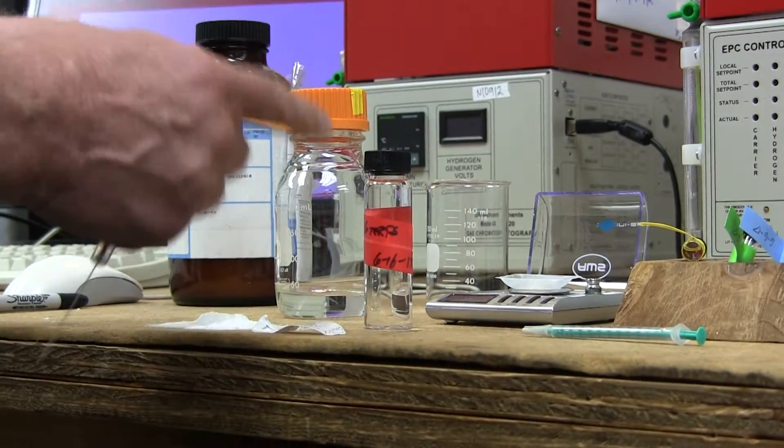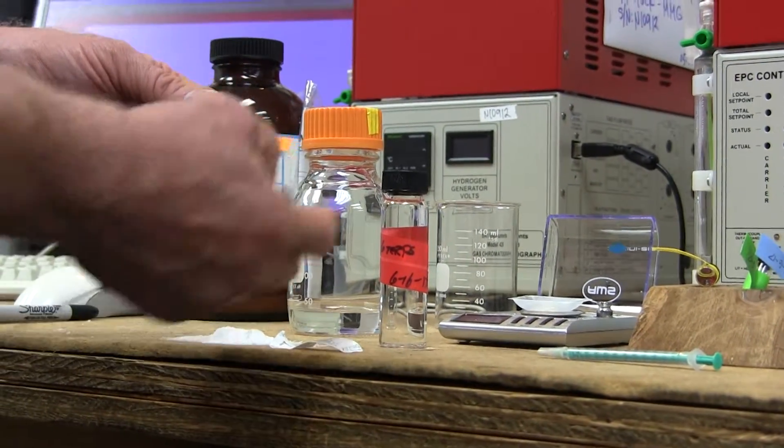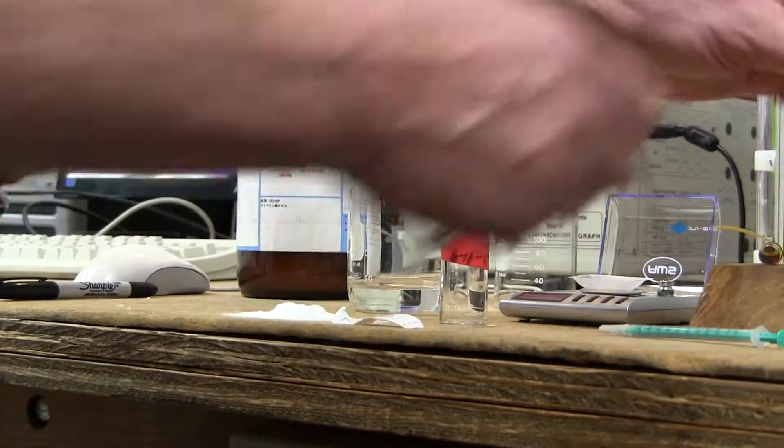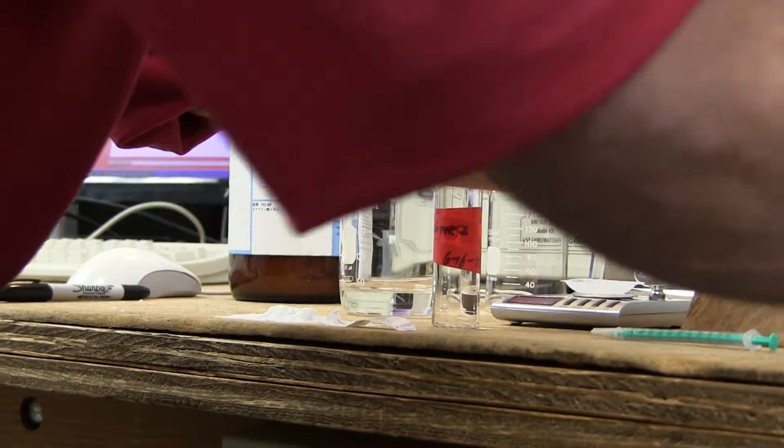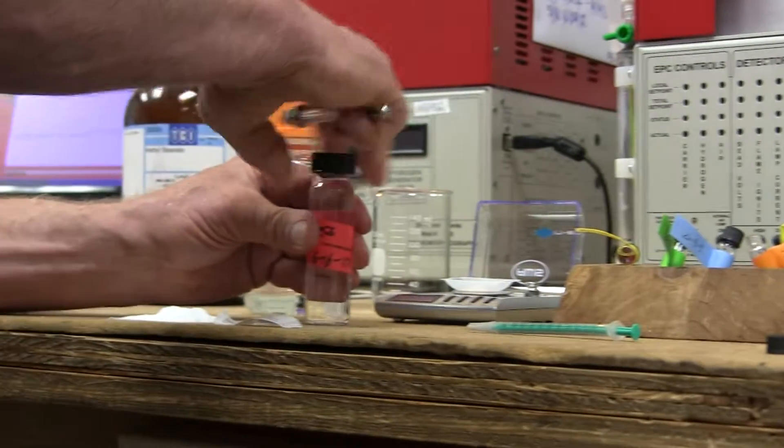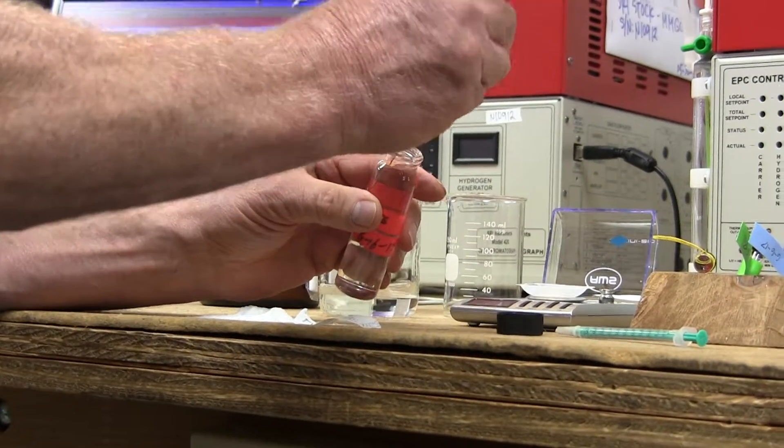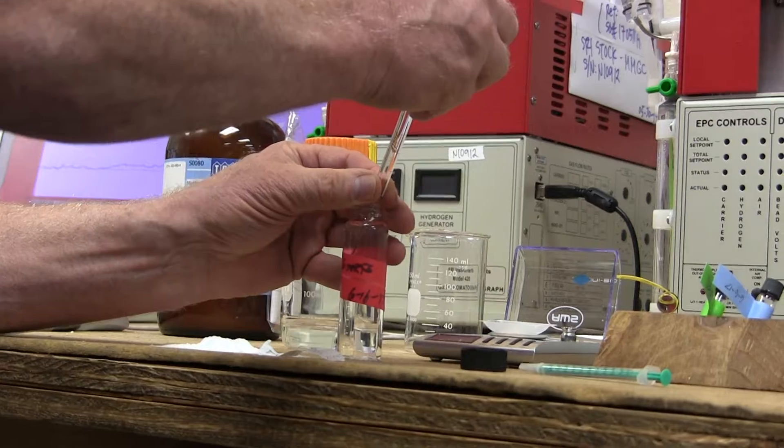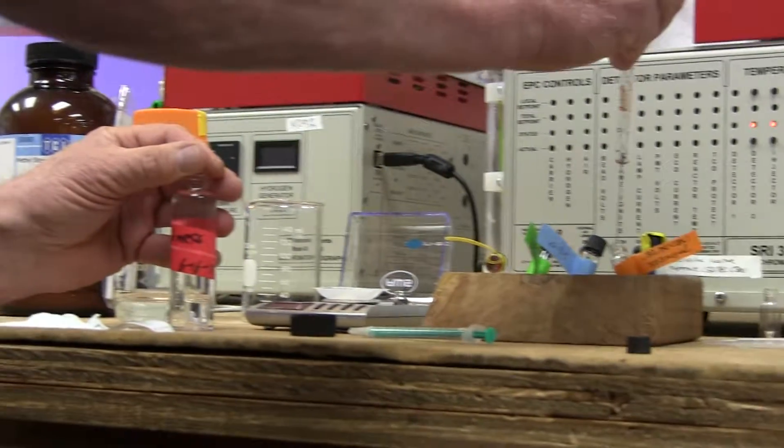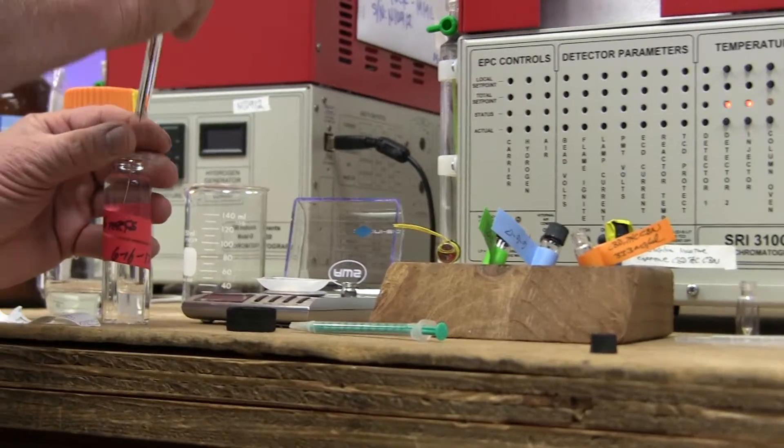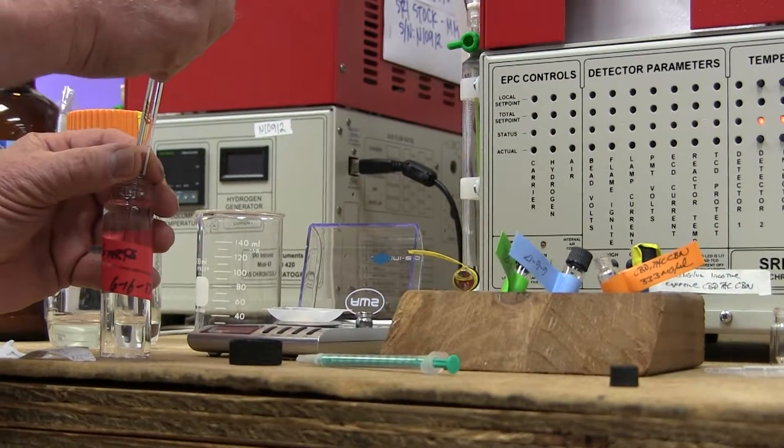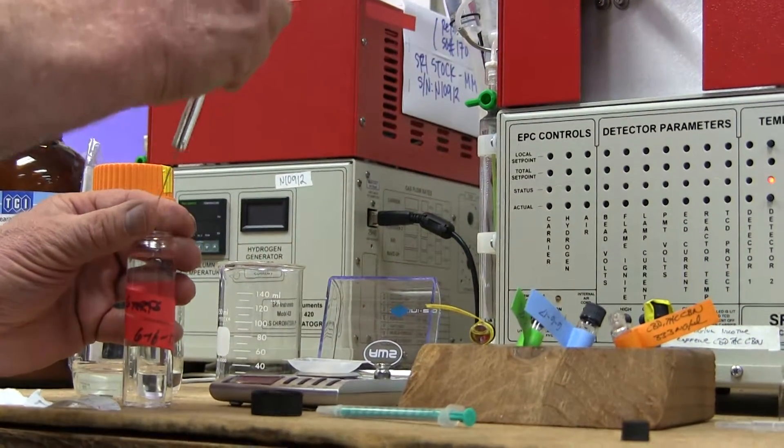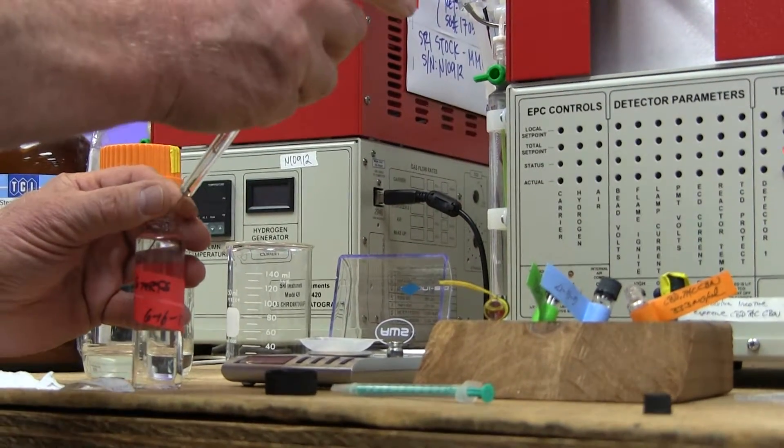That way, we can have one calibration standard that not only includes the three cannabinoids, but also includes the six terpenes that we chose to put into this bottle. So we'll go back with our 100 microliter syringe and take 300 microliters of this. It's only a 100 microliter syringe, so I'm going to have to do this three times. Here's the first 100 microliters into the bottle, then the second 100 microliters, and then the third.